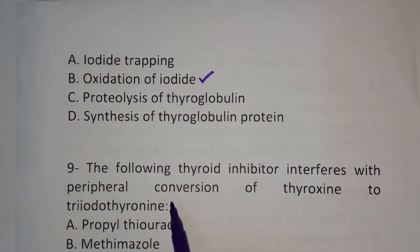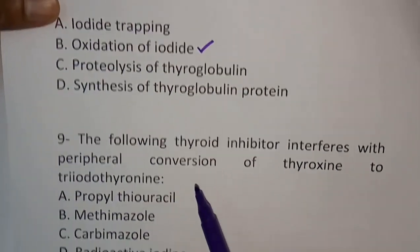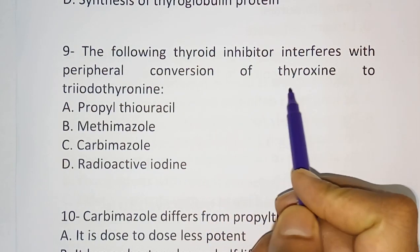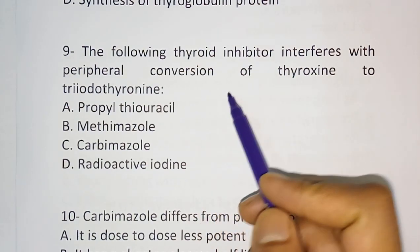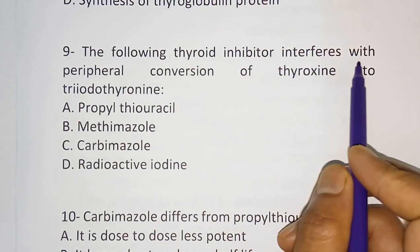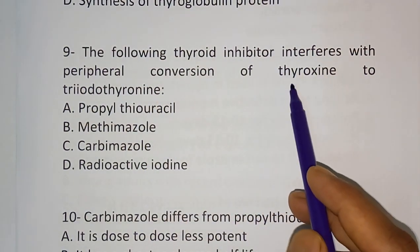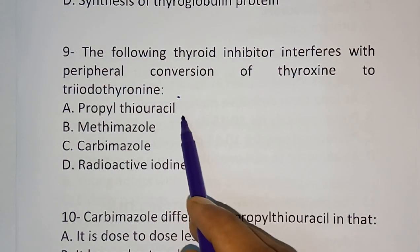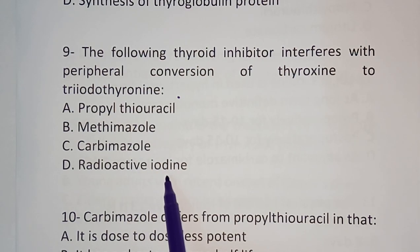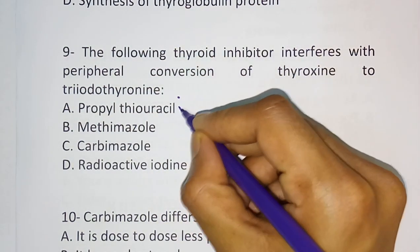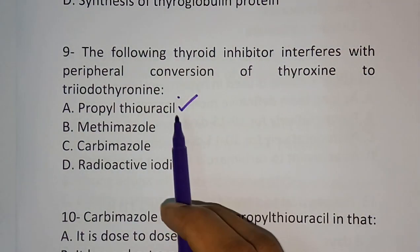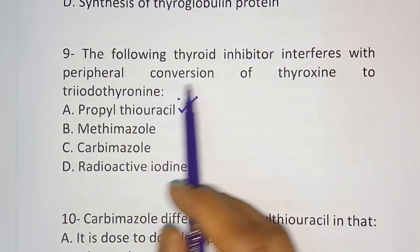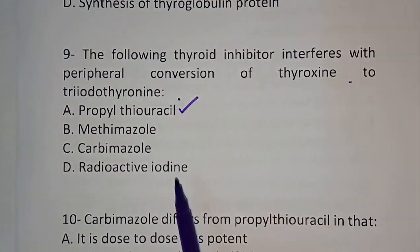Question number nine: The following thyroid inhibitor interferes with peripheral conversion of thyroxine to triiodothyronine — options are propylthiouracil, methimazole, carbimazole, or radioactive iodine. The correct answer is propylthiouracil. This is the mechanism of action of propylthiouracil — it interferes with peripheral conversion of thyroxine to triiodothyronine.